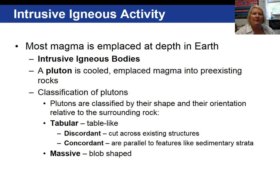Most magma solidifies within the Earth, never making it to the surface. We call these magma bodies plutons — they are intrusive igneous bodies. We classify plutons based on their shape and orientation with respect to the surrounding rock. A tabular pluton, meaning table-like in shape, is called discordant if it cuts across existing rock layers, and concordant if it is parallel to sedimentary rock layers. We can also have a massive pluton, which is simply a blob shape.